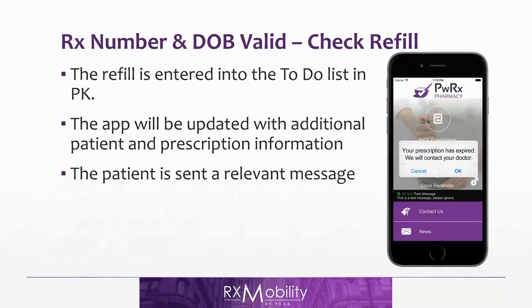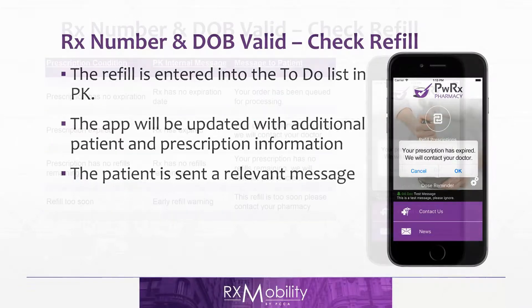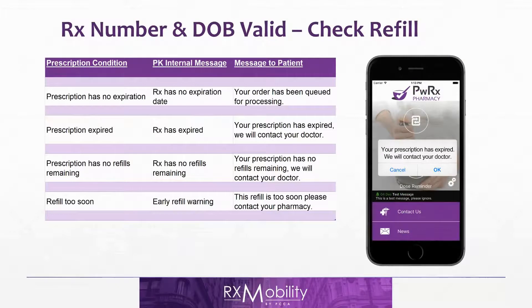In Scenario 3, both the script number and date of birth are valid but the refill needs to be checked in the pharmacy — the next slide will show the reasons why. The refill is entered into the to-do list in Pk, the app is updated with additional patient and prescription information, and the patient is sent a relevant message. In this case: 'Your prescription has expired. We will contact your doctor.'